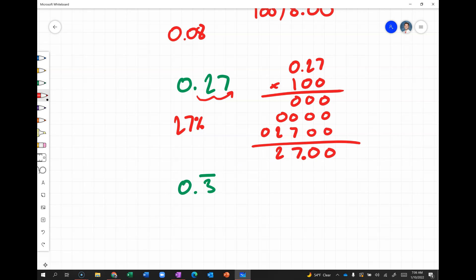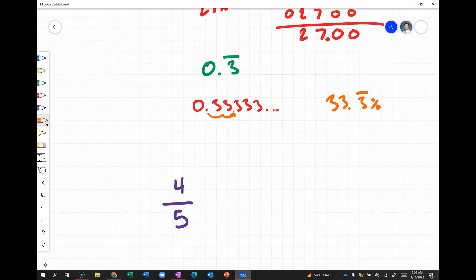So, if we have 0.3 repeating, we need to remember that 0.3 repeating represents 0.333333 dot dot dot, going on forever. This is helpful, though, to write out several decimal places first before converting it. Because, then, if you were to move your decimal two times, you can see you get 33.3333 repeating. And so, we would write this as 33.3 repeating percent.